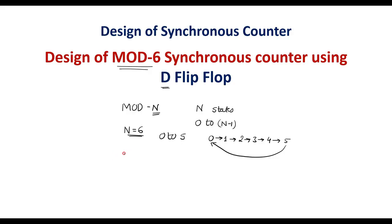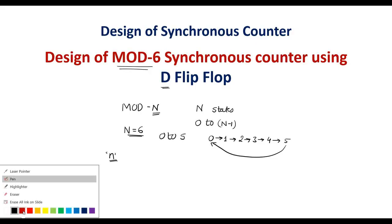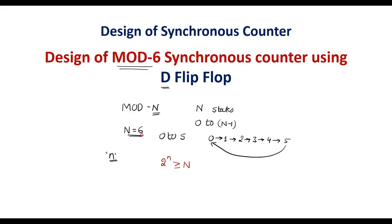The first step in design is to find the number of flip-flops required, represented as n. The formula is 2 power n must be greater than or equal to 6. If n=0, value is 1 — not ≥ 6. If n=1, value is 2 — not ≥ 6. If n=2, value is 4 — not ≥ 6. If n=3, 2 power 3 is 8, which is ≥ 6. Therefore, n must equal 3, meaning we need 3 D flip-flops to design this mod 6 counter.